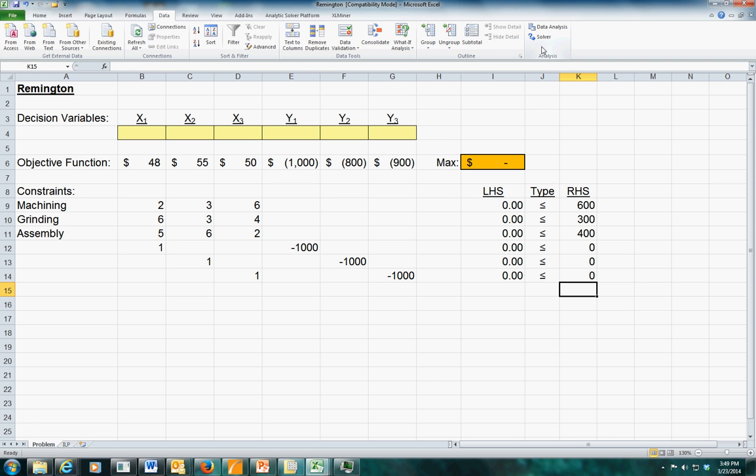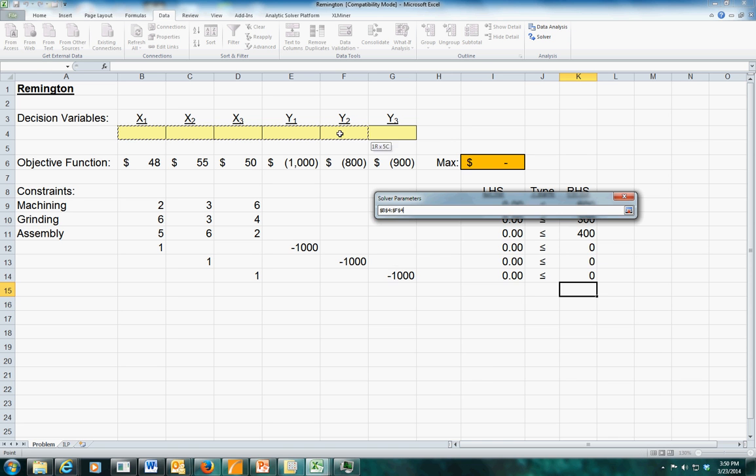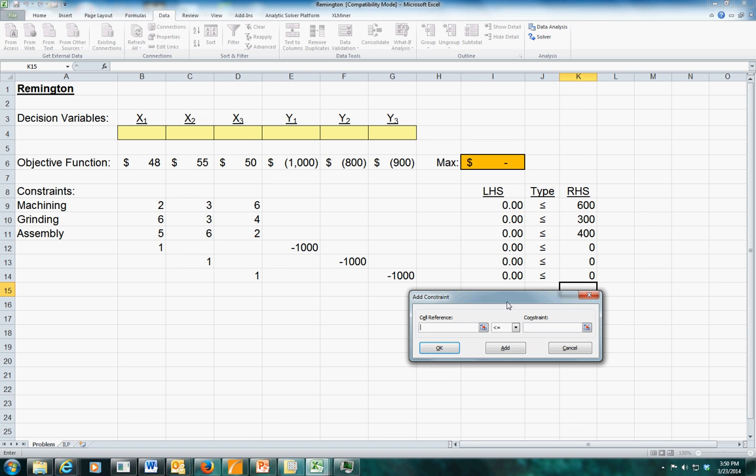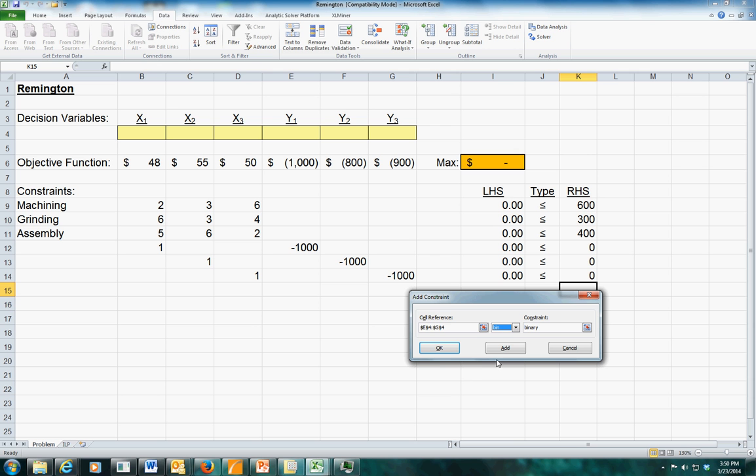Let's go to Solver. Starting off with a blank slate, we're going to try to maximize our profit by changing these cells subject to some constraints. The first one that we need to consider is that these variables here must be binary. We'll add one more. And these are all less than equal to constraints. So that's really easy.